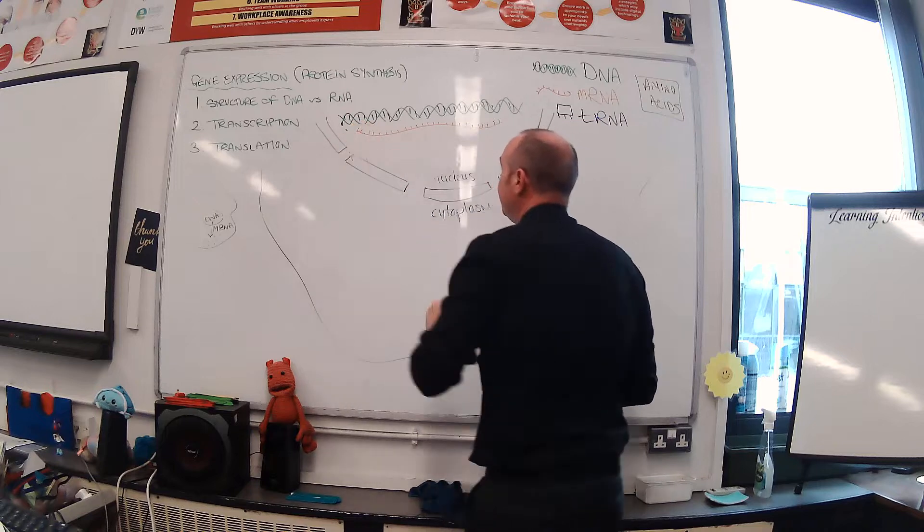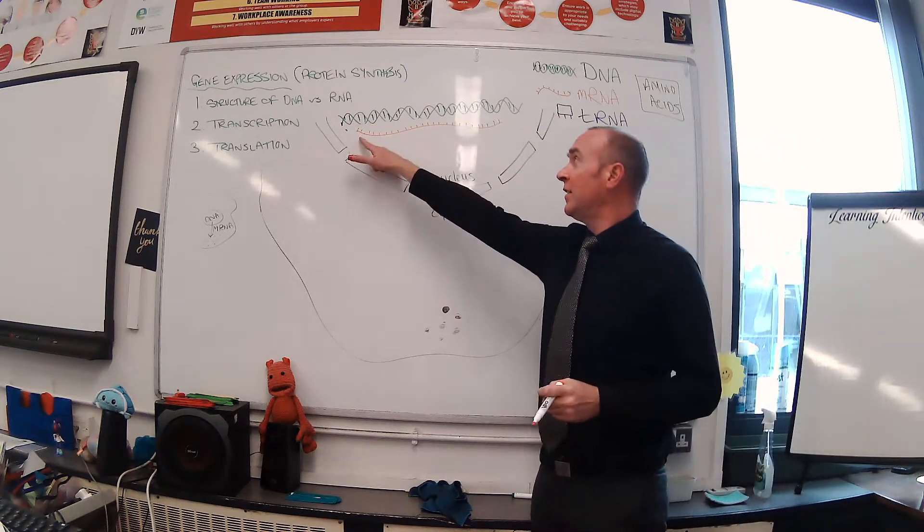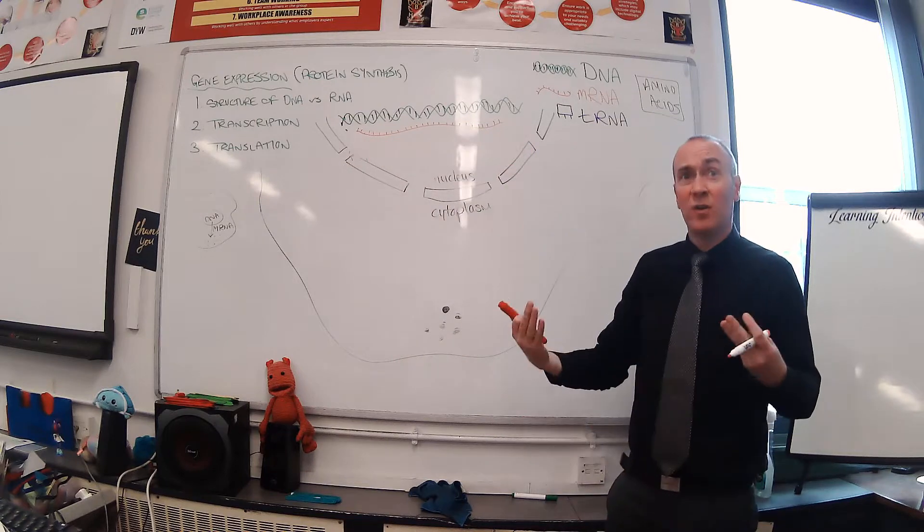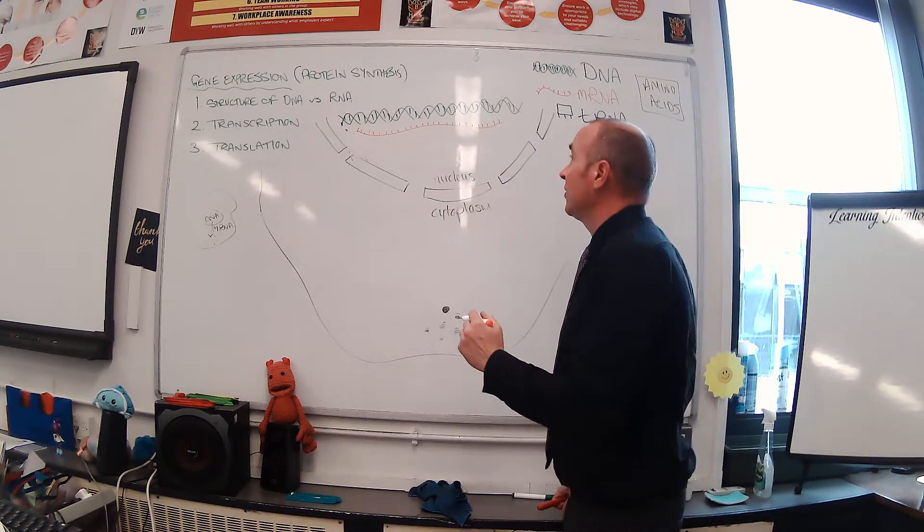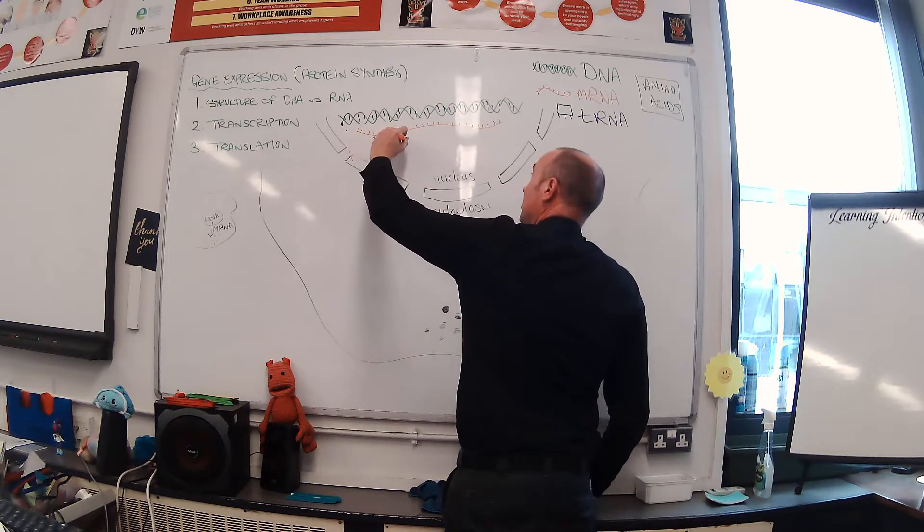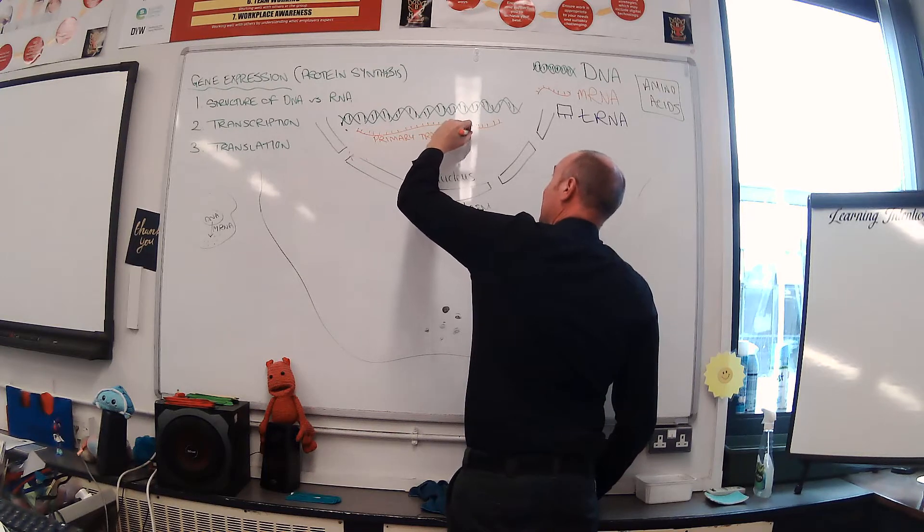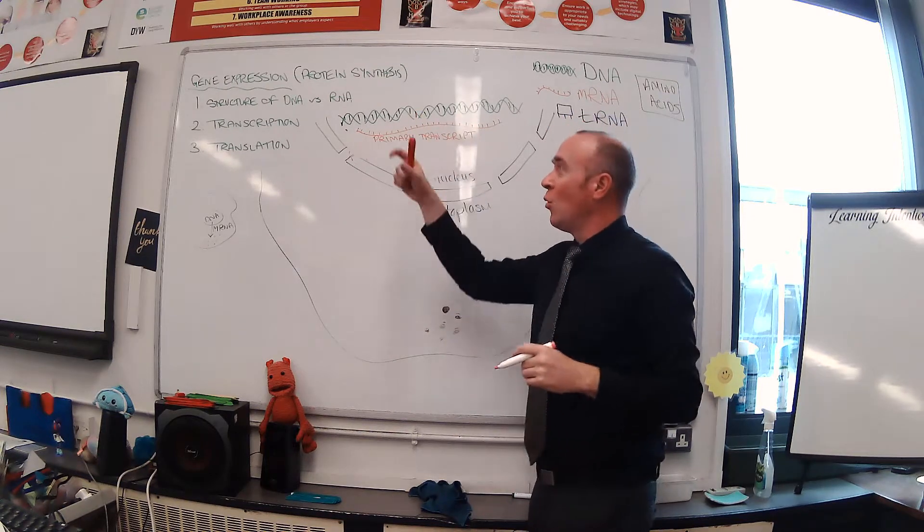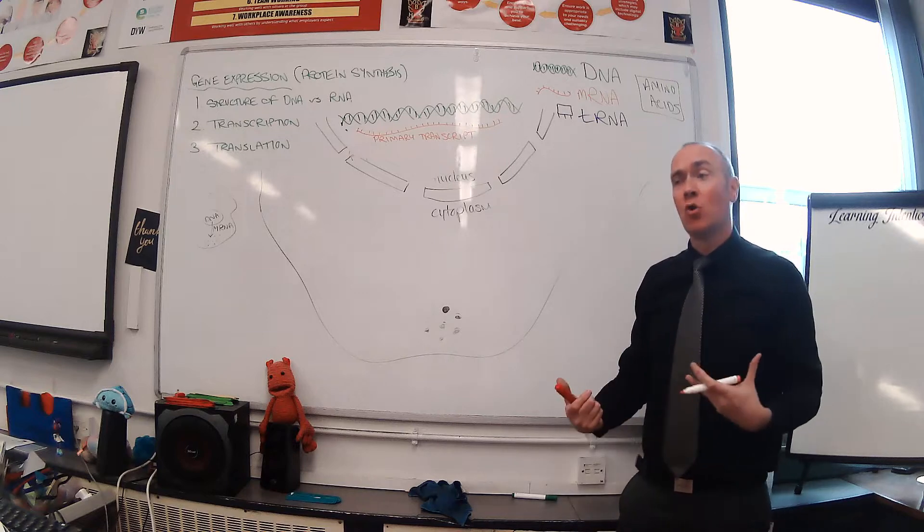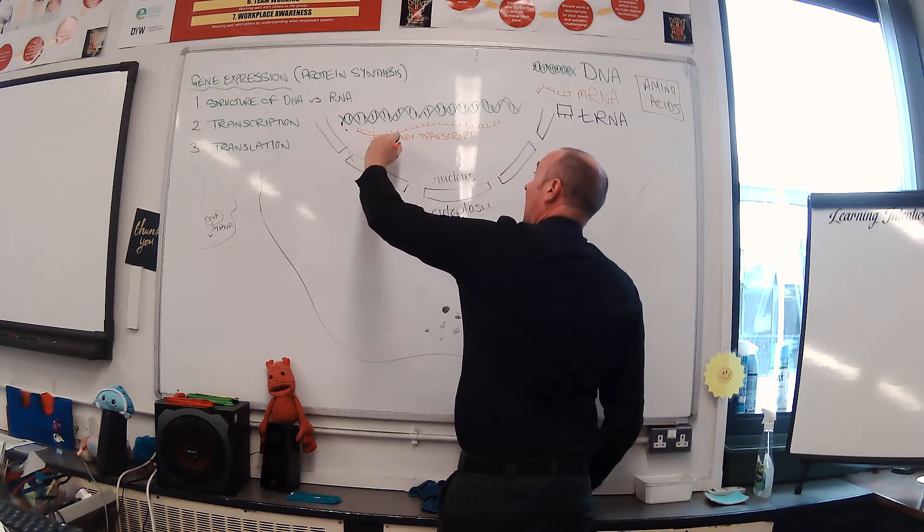That process has happened. We now have a strand of mRNA which matches the DNA order of bases for that gene. But that's not the end of transcription. We've got the mRNA strand, but what we have to understand is that this is called a primary transcript.